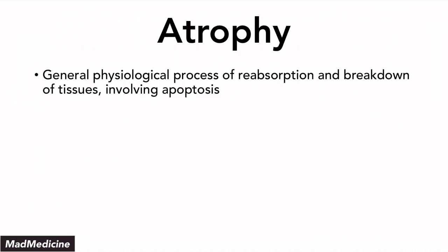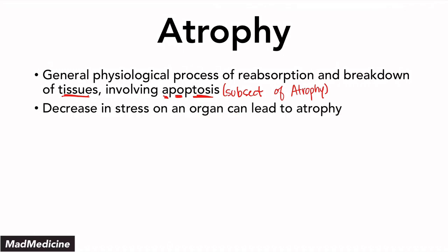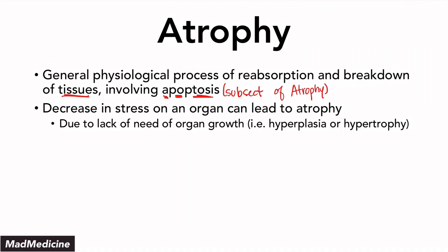Atrophy is a general physiological process in which our bodies resorb and break down tissues, and this actually involves apoptosis. A lot of people think that atrophy and apoptosis are synonymous and one and the same, but that's actually not the case — apoptosis is a subsect of atrophy. What happens in atrophy is that when an organ has stress placed upon it, it's naturally going to grow. But a decrease in stress on an organ is going to cause that organ to shrink through atrophy. This all happens due to a lack of need — if there's no stress being placed upon it, there's no reason for that organ to stay as large as it is.